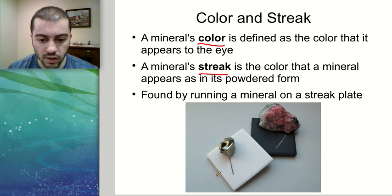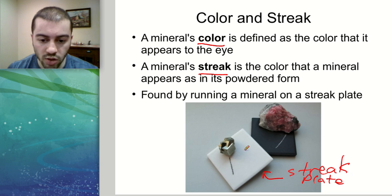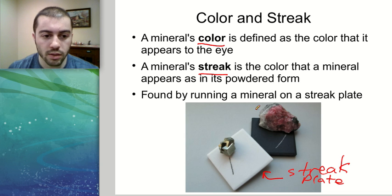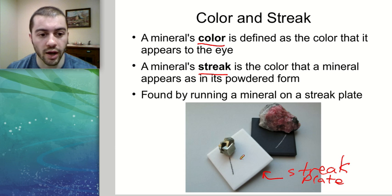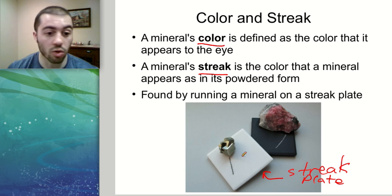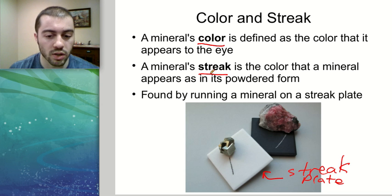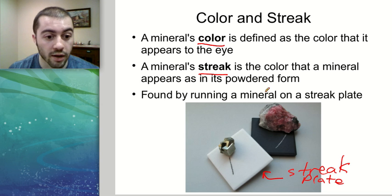There's another color characteristic called streak. Streak is determined by scratching the mineral along a streak plate and seeing what color it leaves behind. This may or may not be the same as the color visible to the naked eye. A mineral that looks black might have a brown or red streak. This helps differentiate minerals that may look the same color on the outside.